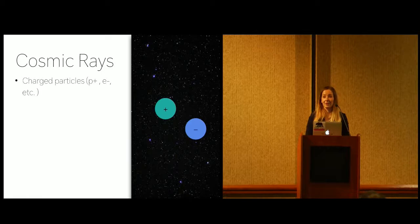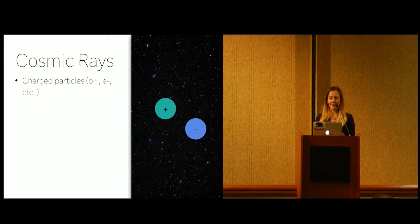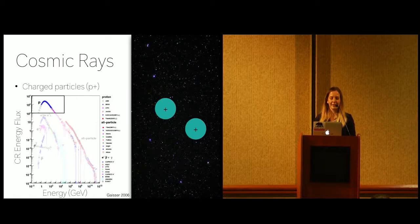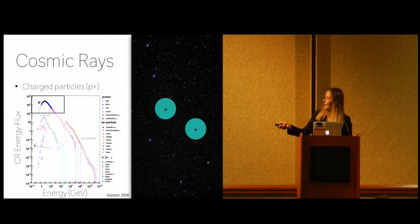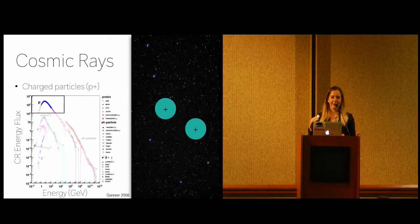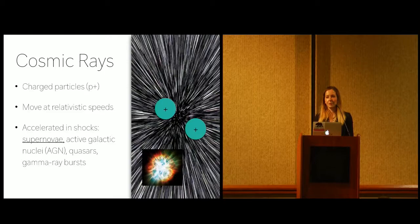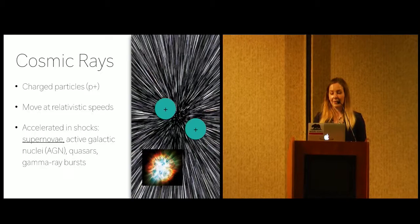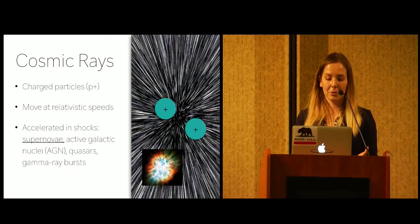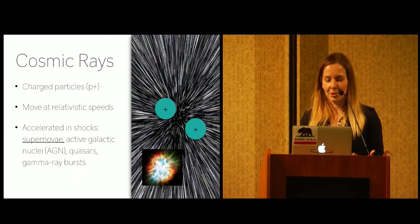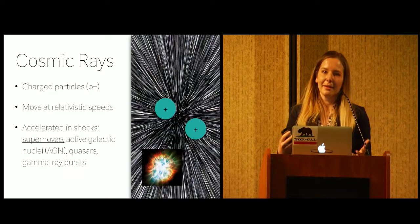So cosmic rays are charged particles, so protons, electrons, really any ions, but for the sake of modeling them, we're going to say that they're just protons, and this is observationally motivated, because if you look at the cosmic ray energy flux as a function of their energy, protons are by far the dominant flux that we receive. Cosmic rays move at relativistic speeds, and they're accelerated to these relativistic speeds in extreme shocks like supernovae, AGN, quasars, gamma ray bursts, but I have supernovae underlined because they're observed to come from supernovae, and it's pretty typical for galaxy simulations to have supernova feedback, whereas having AGN is extra perks.